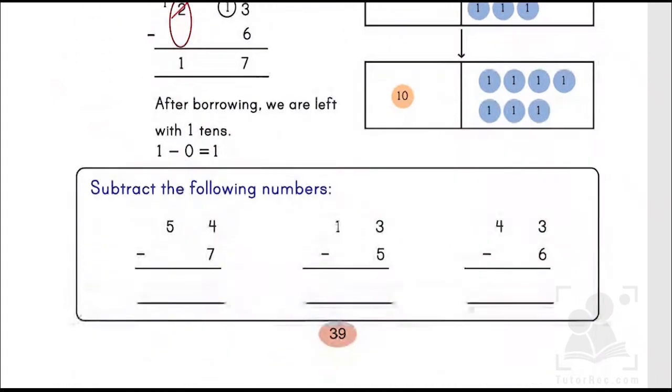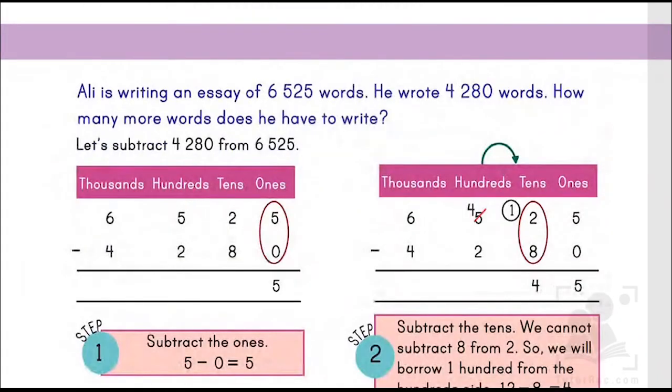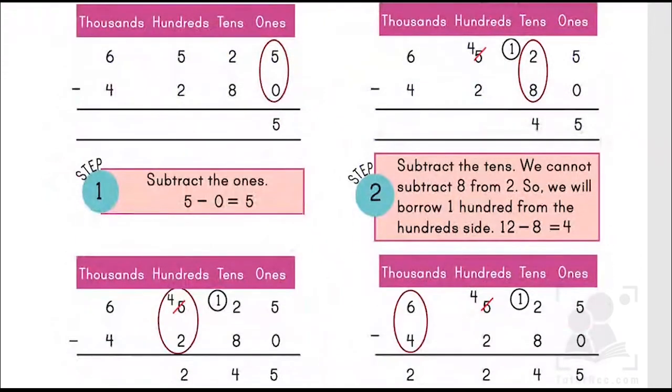Another example says Ali is writing an essay of 6,525 words. He wrote 4,280 words. How many more words does he have to write? So we need to find the difference. What we are going to do is we are going to put 6,525 up and then below it 4,280. We have to follow the same thing, first step which is subtracting the ones.